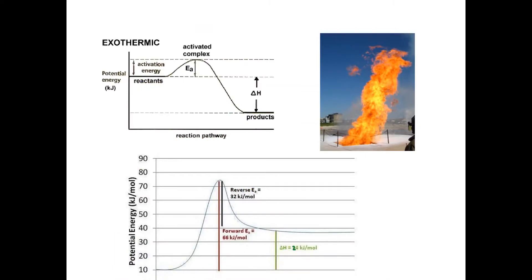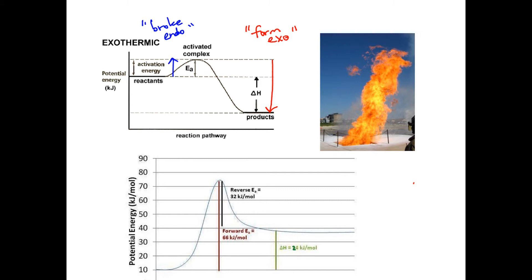We're now on page 12 of the Chapter 12 AP Chemistry packet on kinetics. We're going to begin this page talking about potential energy diagrams. This diagram is certainly an exothermic reaction, and remember you have to break bonds — that's what this part of the diagram represents. So this portion is endothermic because it's breaking bonds — remember, broke endo. The right side of the graph is where you are making bonds, form exo, and you can tell that more energy was released forming the bonds than what was required to break them, so this reaction overall was exothermic.